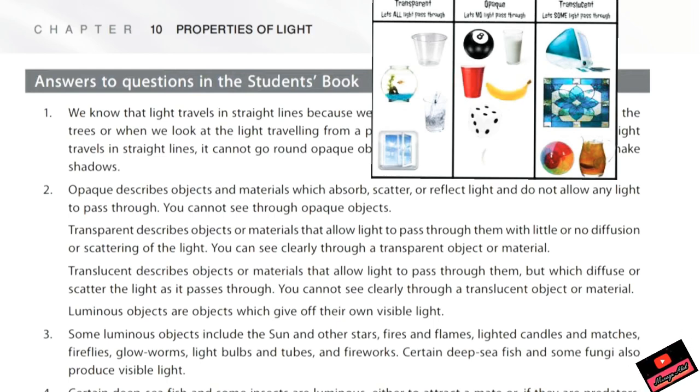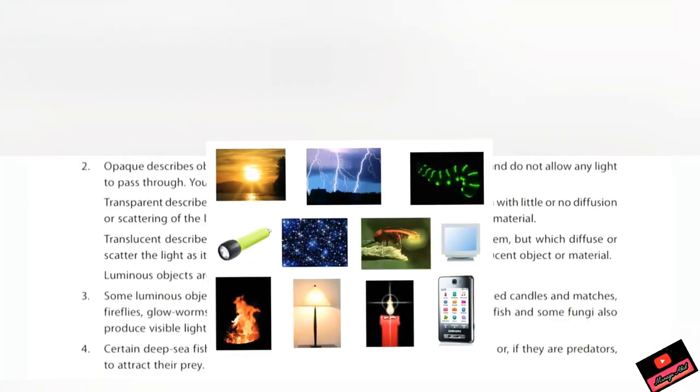First we will discuss transparent, opaque, and translucent objects. Transparent are the objects like glass or mirror, things that can easily allow light to pass through them. Opaque never allow light to pass through them, and translucent can partially allow light to pass. You can pause the video and write the answers.